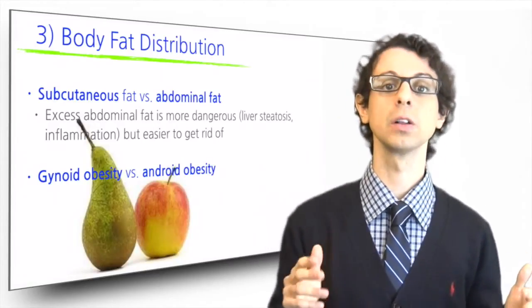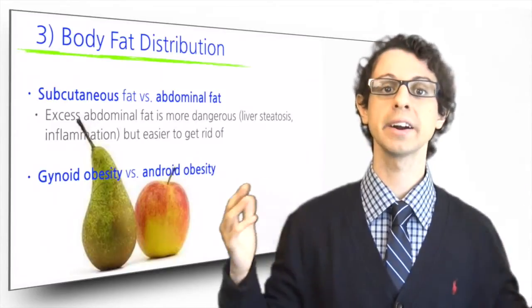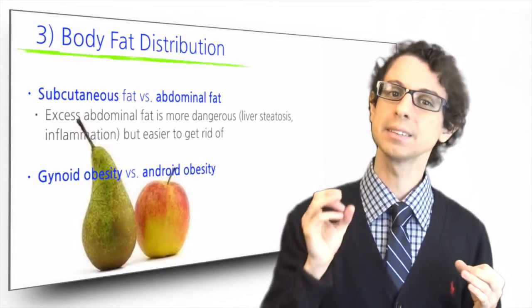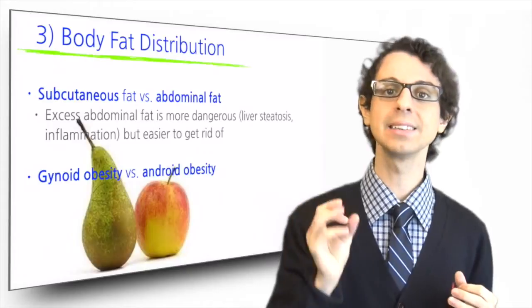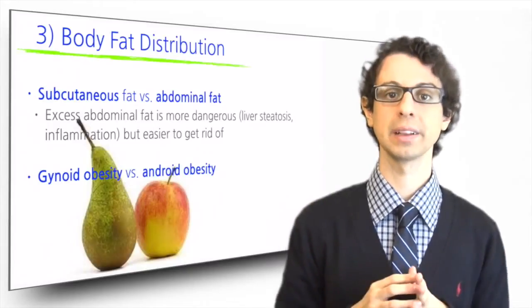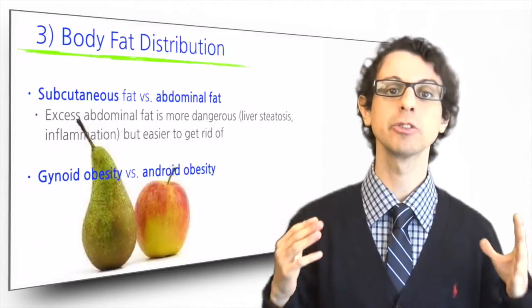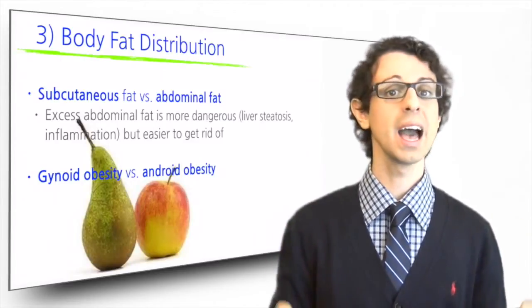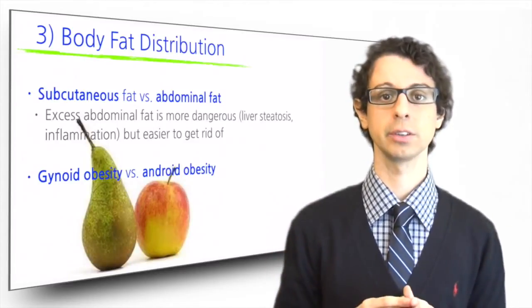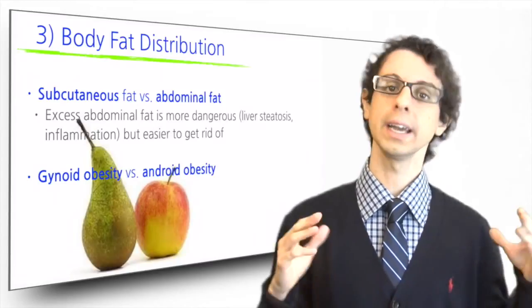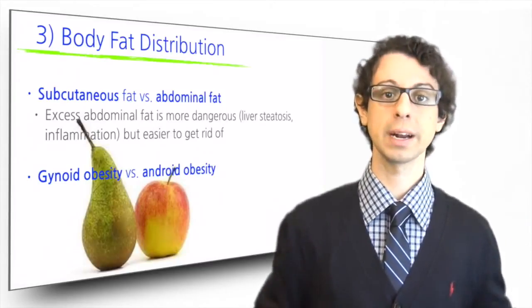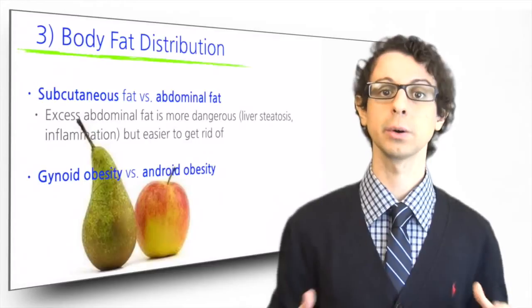Excess fat in these areas is called gynoid obesity or pear-shaped. This fat is much less active and less easily mobilized compared to abdominal fat. The main advantage of this is that it presents much lower risks for our health, and in particular for cardiovascular disease and diabetes, although it can still cause problems of stress on joints leading to osteoarthritis.